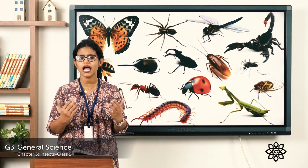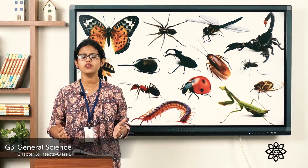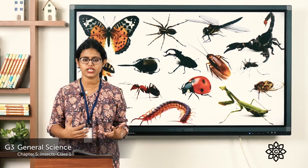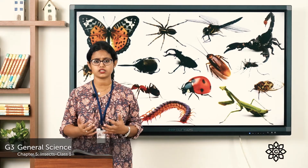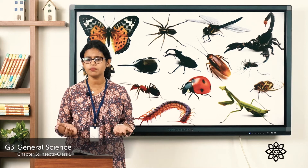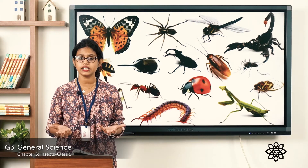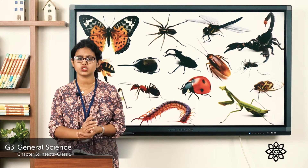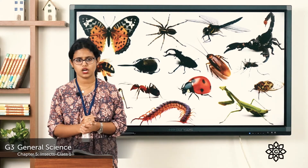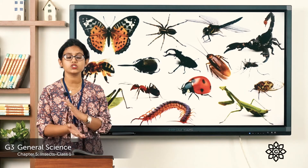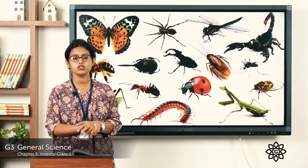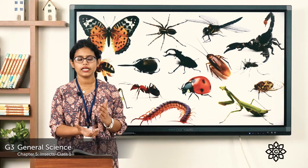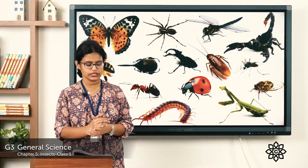Insects are small animals commonly found around us. They differ in shape, size, and color. Do all insects look the same? No. Do all insects eat the same food? No. Today we are going to learn about the body parts of an insect.